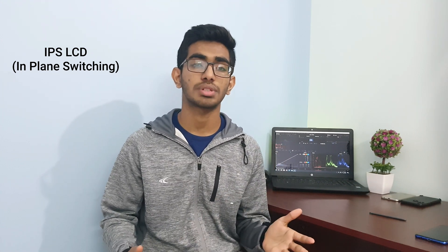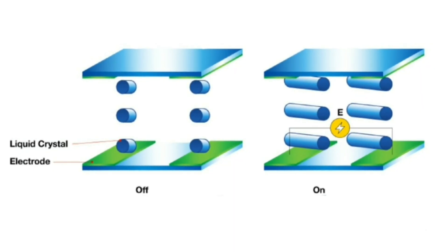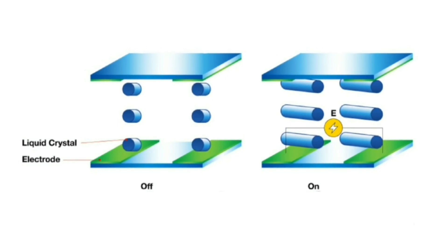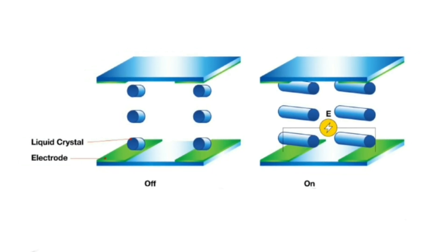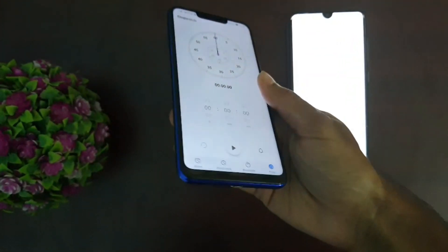Just like TN LCD, VA LCDs also have really bad viewing angles. Next is IPS LCD — IPS stands for in-plane switching. IPS LCD is the most popular and premium option among all types of LCDs. IPS LCD crystals are parallel to the substrate, and when current is applied they move horizontally to let the light through. IPS LCD has the best viewing angles and color saturation compared to other types of LCDs.